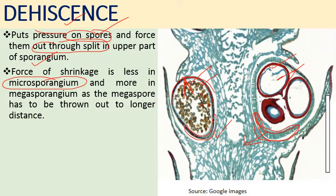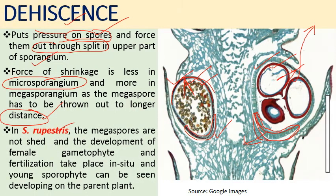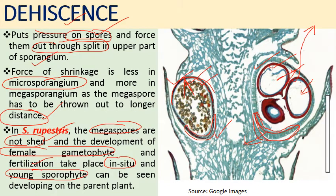These factors put pressure on the spores and force them out through the split in the upper portion of the sporangium. The force of shrinkage is less in microsporangia compared to megasporangia, because megaspores need to be thrown out to a longer distance. However, in Selaginella rupestris, the megaspores are not shed — female gametophyte development and fertilization take place in situ within the megasporangium. This retention of megaspore within the megasporangium is an important step toward seed habit.